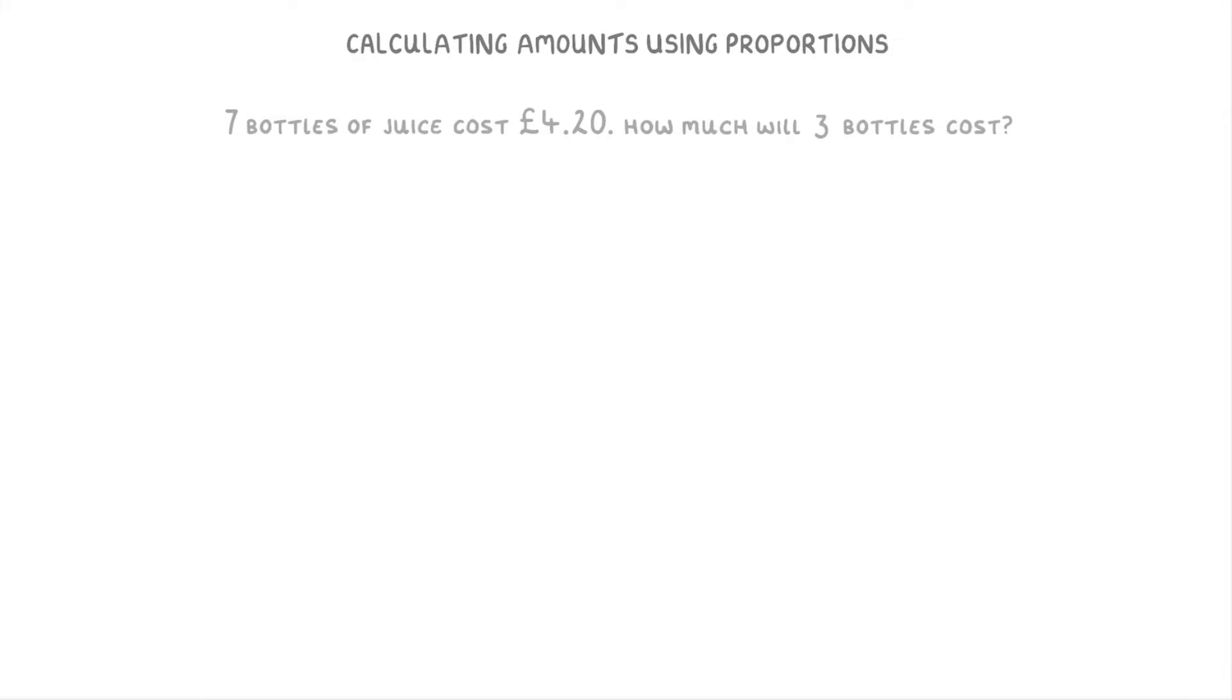For example, if you take a look at this question here, we're told that seven bottles of juice cost £4.20. And we're asked how much will three bottles cost? So the relationship in this question is about the number of bottles and the cost of those bottles. We're told that seven bottles is £4.20, but we need to work out how much three bottles will cost.